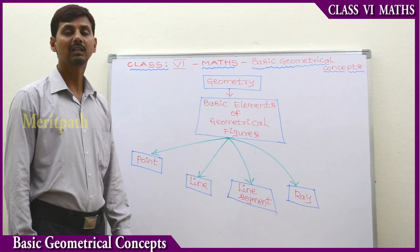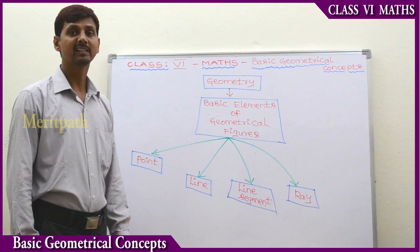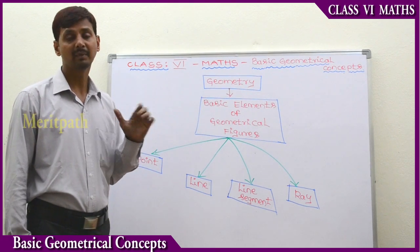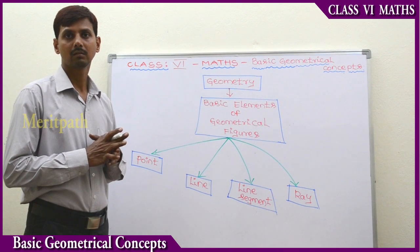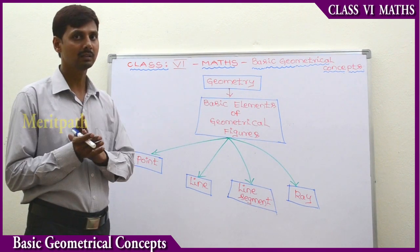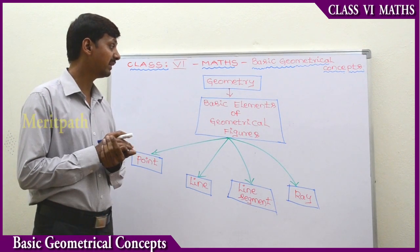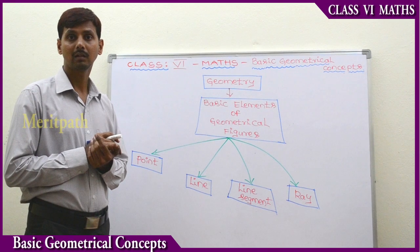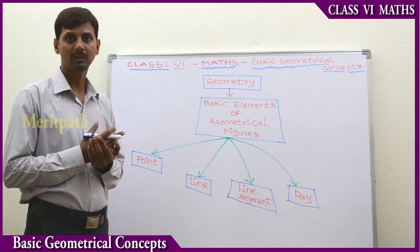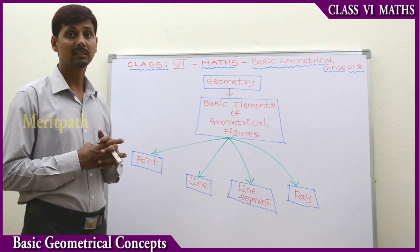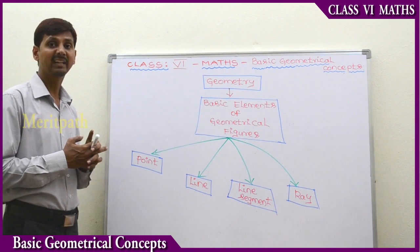We have discussed earlier about geometry — Geo means Earth, Metron means measurement, so Earth measurement is called Geometry. We have some basic elements of geometrical figures: point, line, line segment, and ray. Let's define each of these geometrical figures.